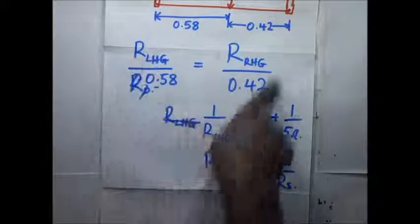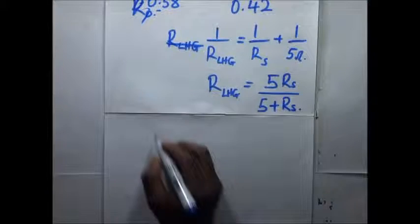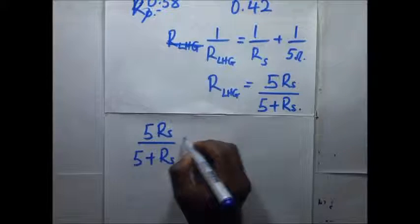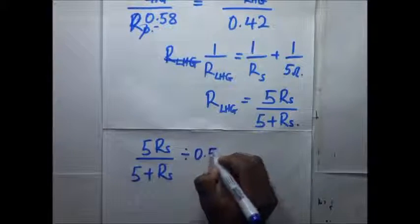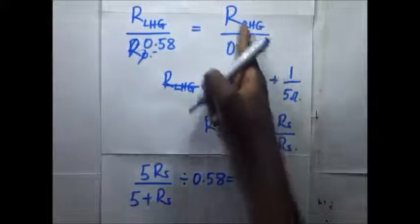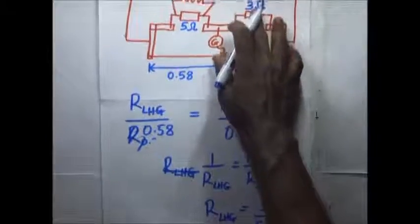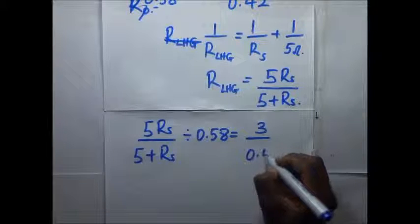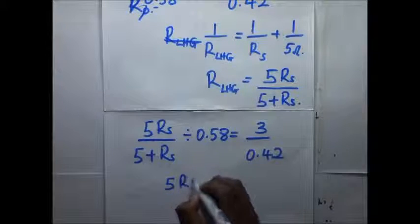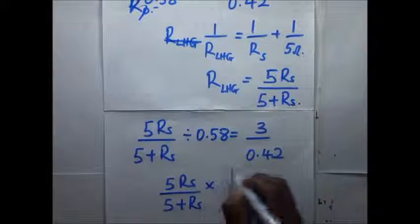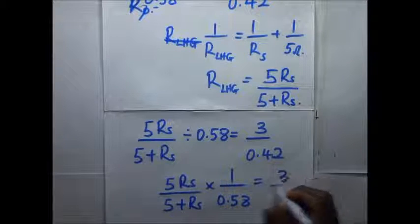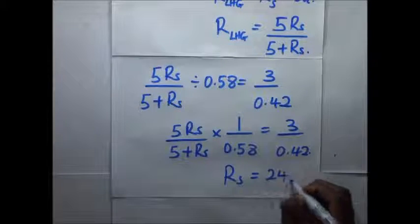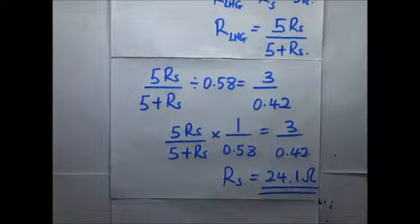The equation becomes: (5Rs / (5 + Rs)) divided by 0.58 equals 3 divided by 0.42. Rearranging: 5Rs over (5 + Rs) multiplied by 1 over 0.58 equals 3 over 0.42. Solving this, we end up with Rs equal to 24.1 ohms, and that is the resistance of the shunt wire.